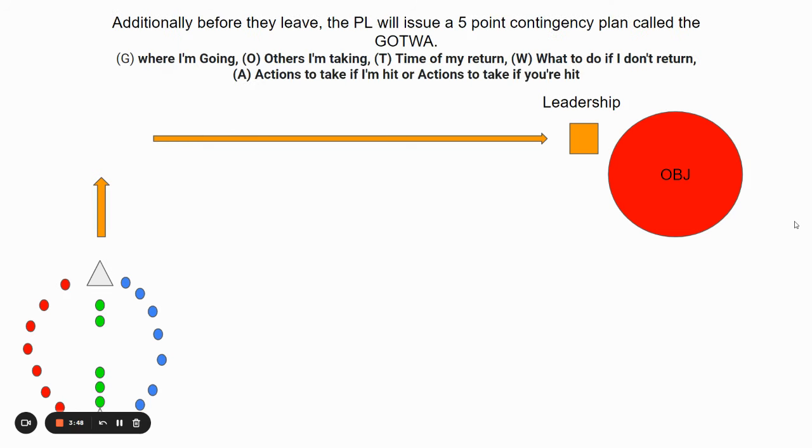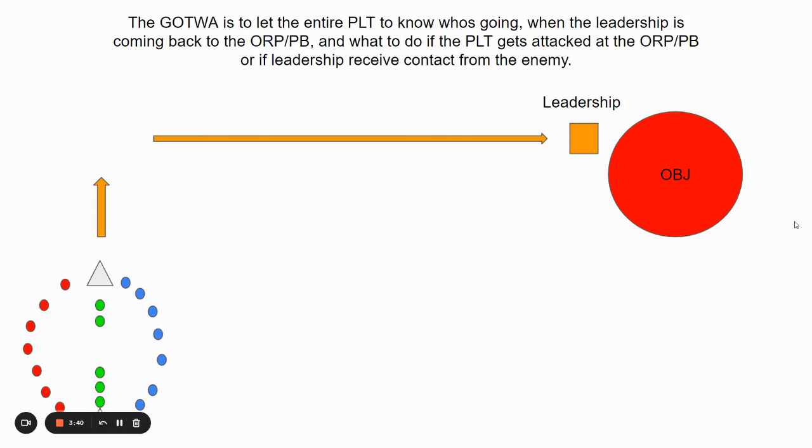Before you leave to go do the leader's recon, the platoon leader will issue a five point contingency plan called the GOTWA. The GOTWA is to let the entire platoon know who's going, when the leadership is coming back, and what to do if the platoon gets attacked or what to do if the leadership gets attacked.